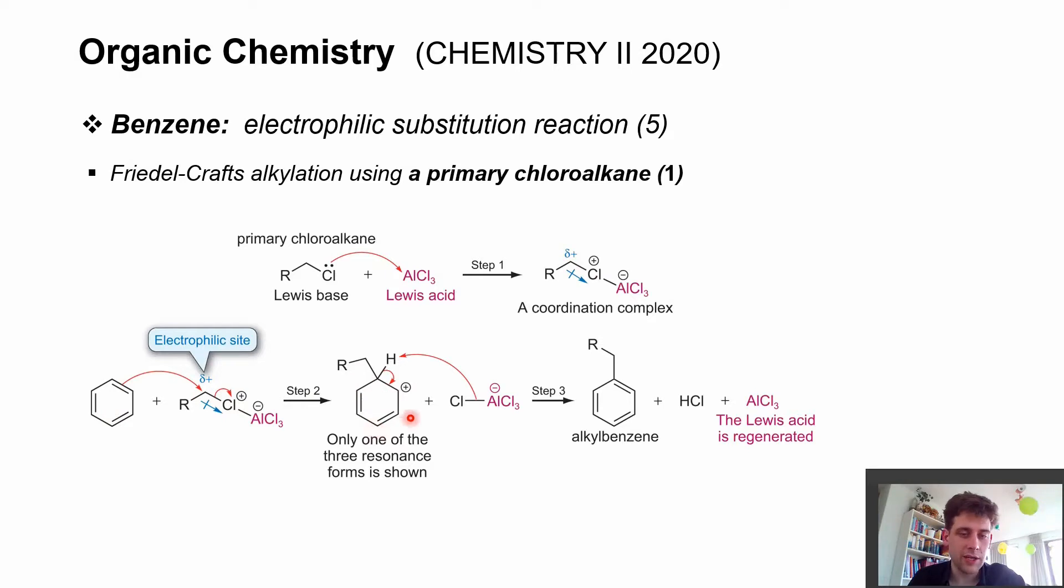This intermediate gets stabilized just as we saw with chlorine substitution. But in this case, we're not left with chlorobenzene but instead an alkylbenzene, because we're introducing the organic rest that was previously attached to the chlorine atom. This is a very nice way to link together carbon atoms.